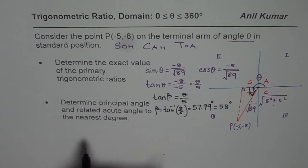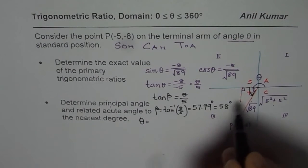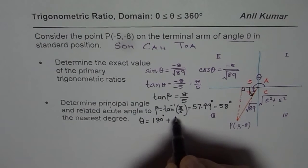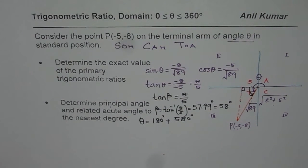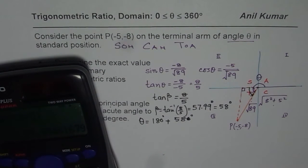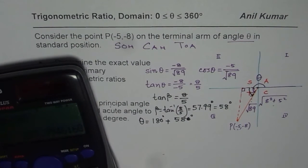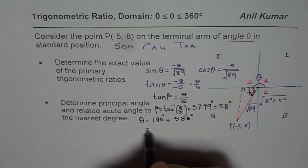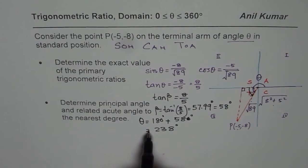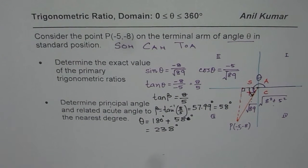The principal angle theta equals 180 degrees plus beta, which is 58 degrees. So theta equals 180 + 58 = 238 degrees. That is the principal angle. That is how you can find both the acute angle and the principal angle for the given situation.